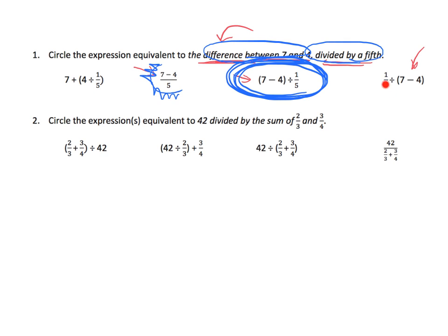This is one fifth divided by the difference between 7 and 4. So this is the exact opposite, or the backwards, of what we want.